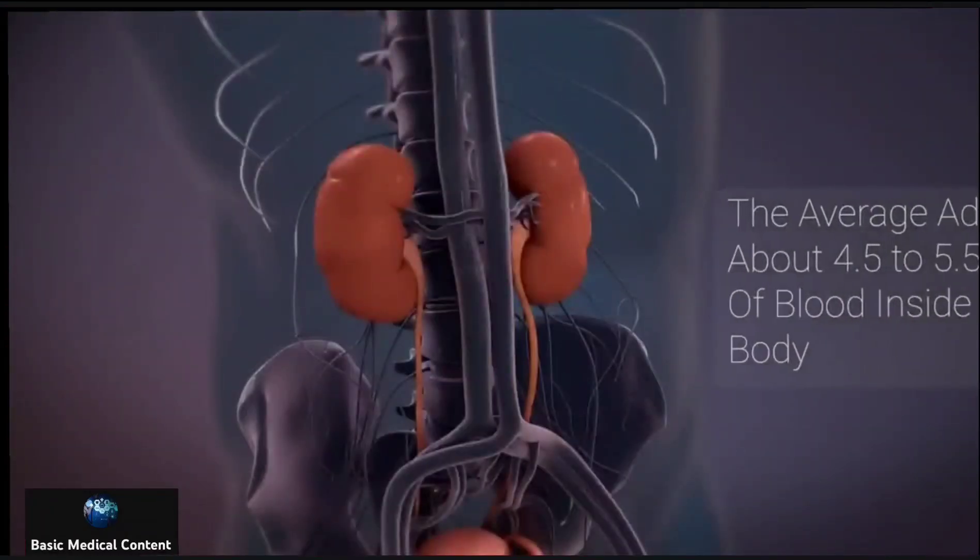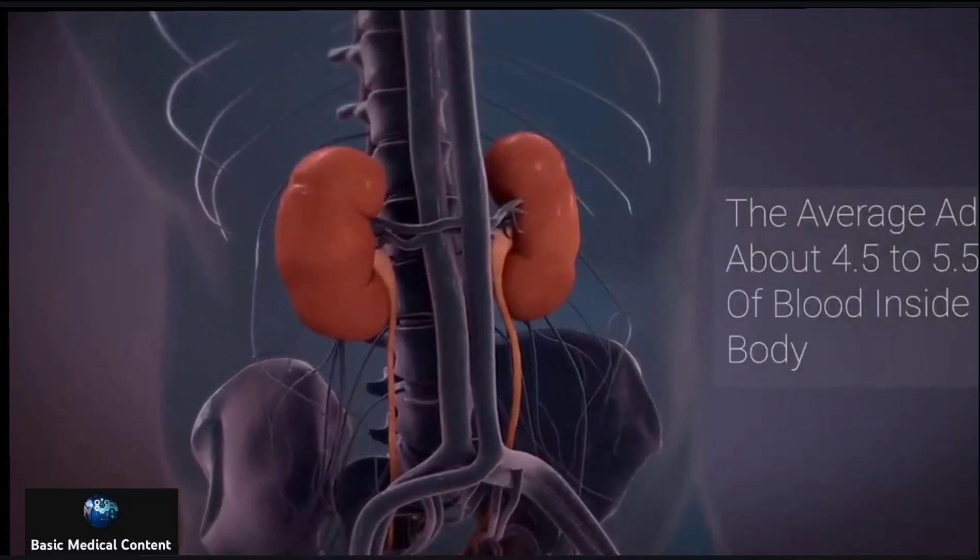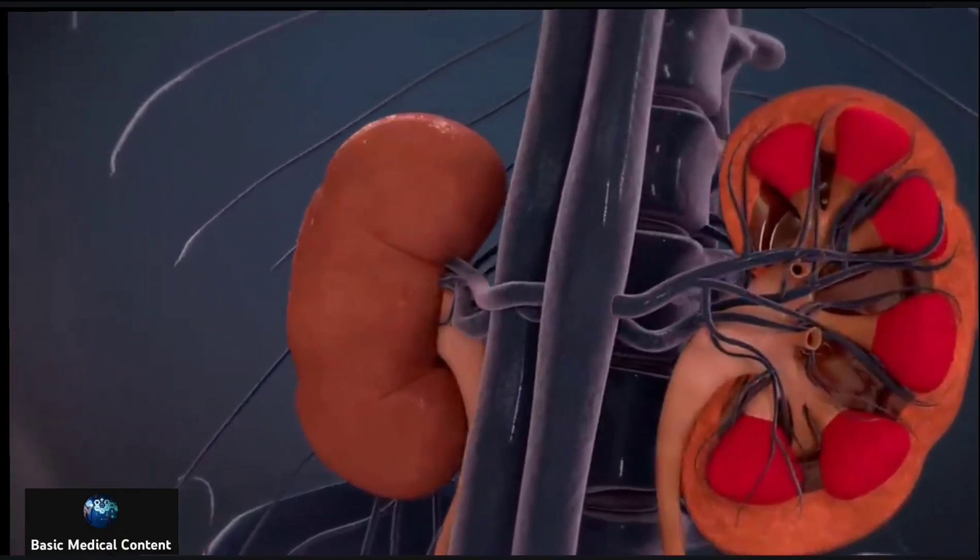The average adult has about 4.5 to 5.5 liters of blood inside their body. Blood is carried into the kidneys by the renal artery.